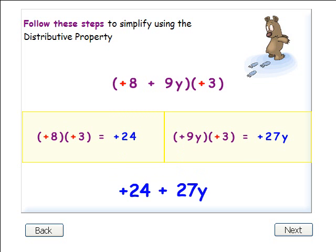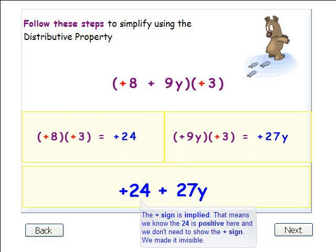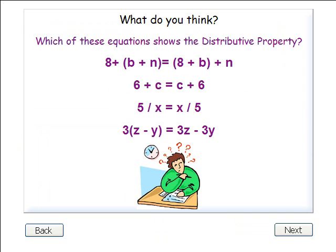The plus sign in front of the 24 is implied. That means we know the 24 is positive here and we don't need to show the plus sign. We made it invisible. Which of these equations shows the distributive property? Pick an equation and then wait a few seconds and we'll show you if you picked the correct one.